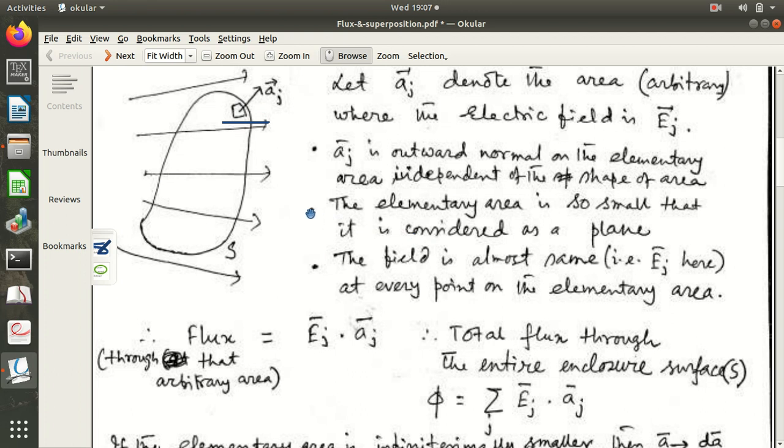And as it is not a particular point, but an extension in two-dimensional space, this area, so you may think that the electric field at this corner of the area may be different from the electric field at this corner. But, thing is not that, as this area is sufficiently small, the field is almost same and we consider it to be same at every point on the elementary area. That is the needed thing.